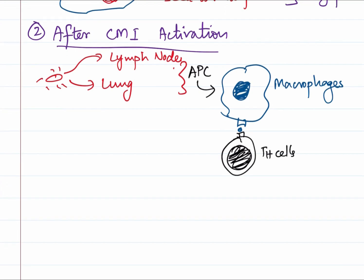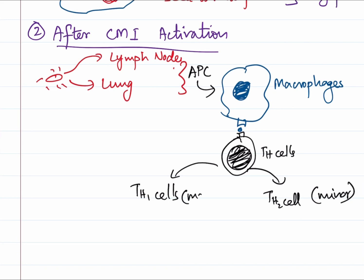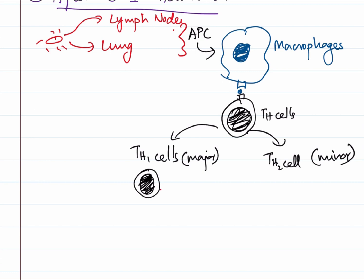These T-helper cells will get activated into two types: Th1 cells and Th2 cells. The major response comes from the T-helper 1 cells. Now these T-helper 1 cells will secrete interferon gamma - this is the most important mediator released by the Th1 cells.